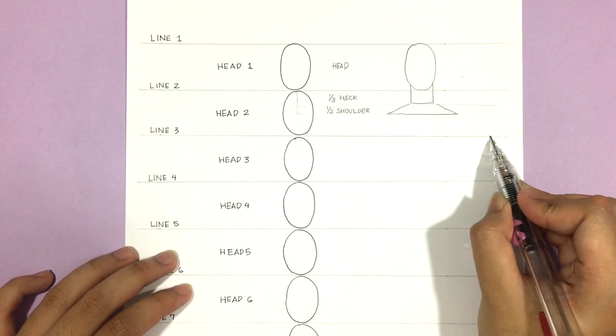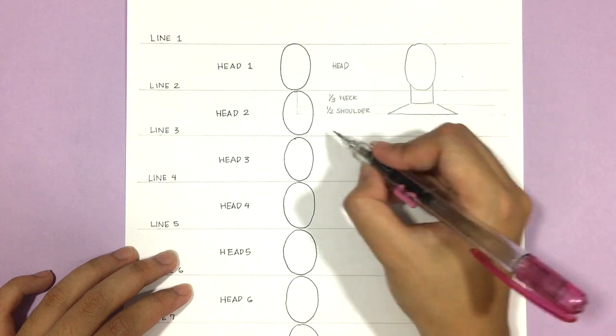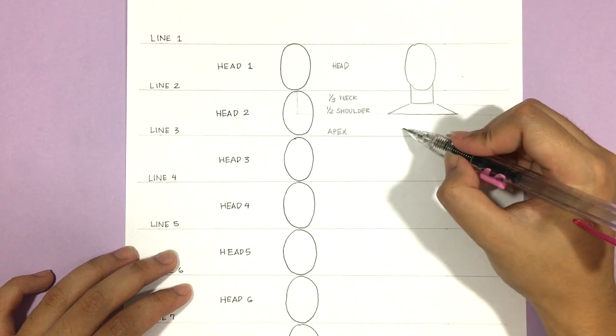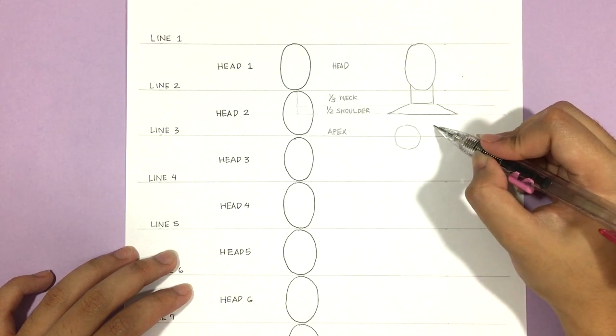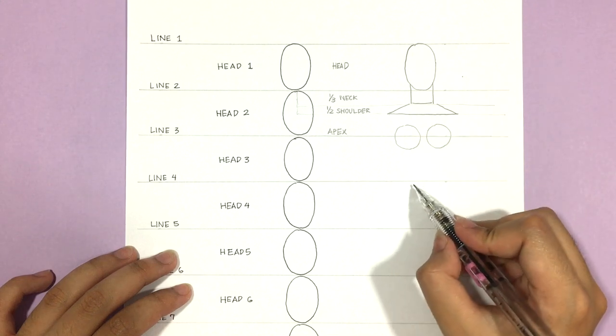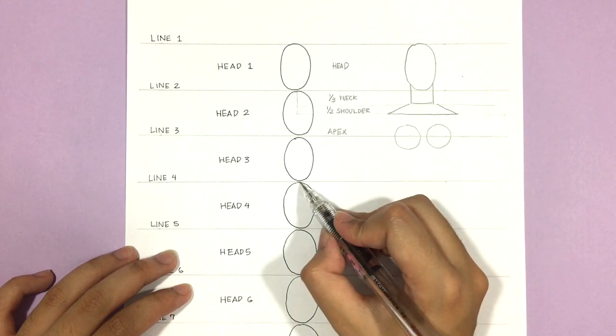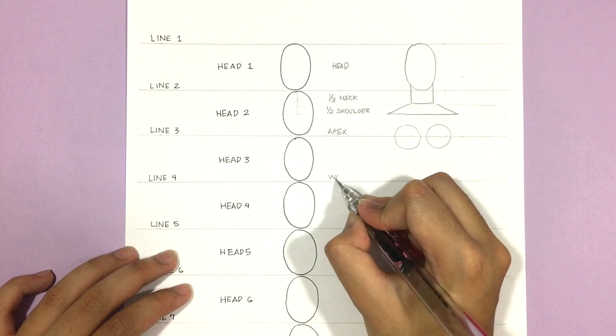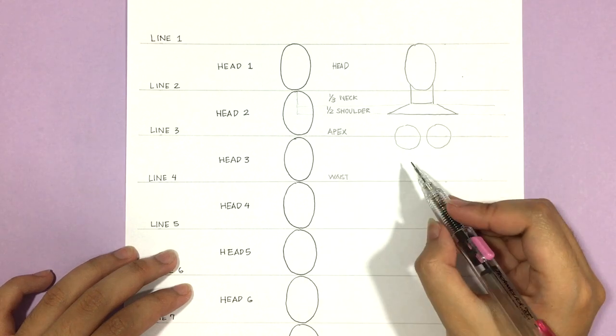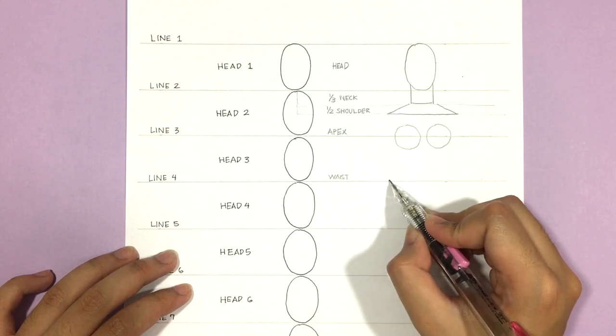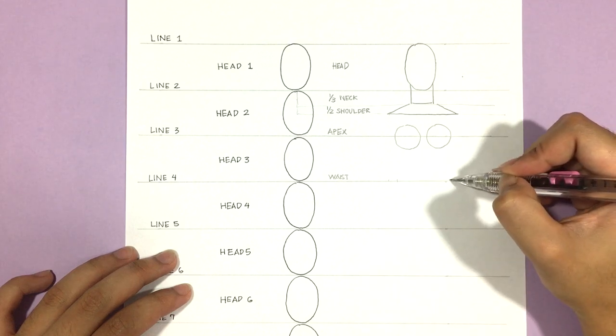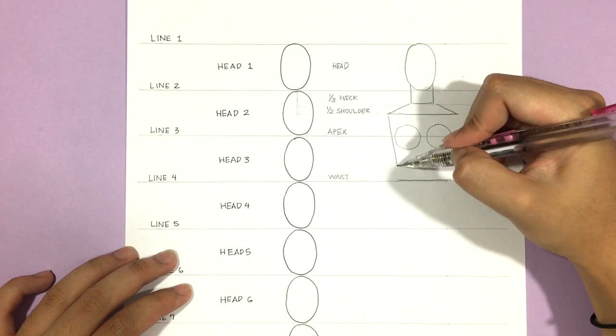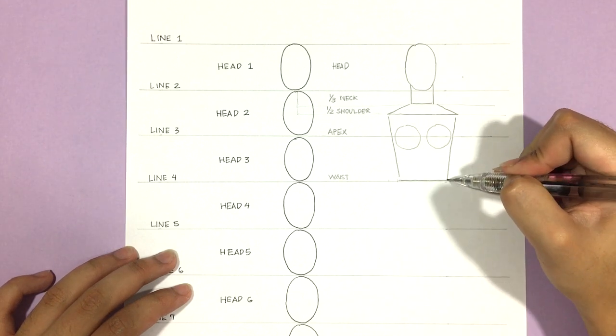Then the top of head three is the apex or the center of this person's boobs. So I'm just drawing two circles. And starting with geometric shapes like this can make it easier to visualize the body, especially when you're just starting out. Next, the top of head four is where the waistline will be. And because we tend to see small waists in high fashion models, this line is usually drawn much shorter than the shoulder line. But again, it can be as wide or as narrow as you want.